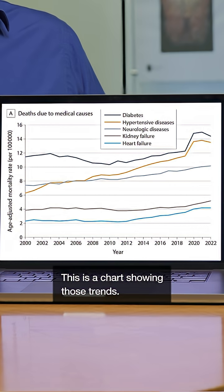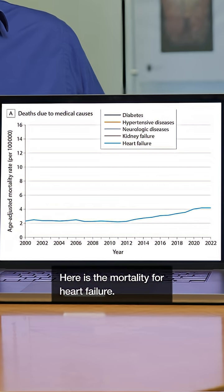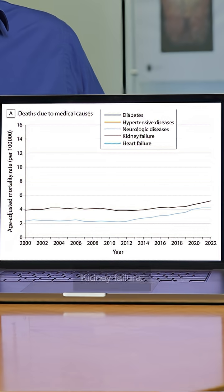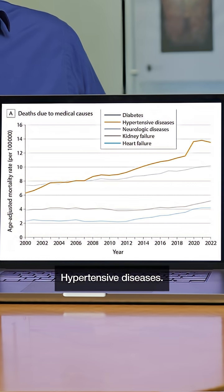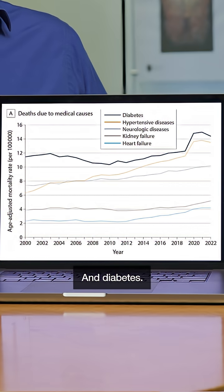Similarly, over the last two decades, deaths due to medical causes were also increasing. This chart shows those trends, including mortality for heart failure, kidney failure, neurologic diseases, hypertensive diseases, and diabetes.